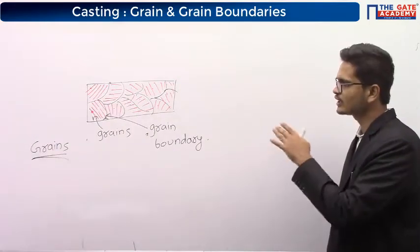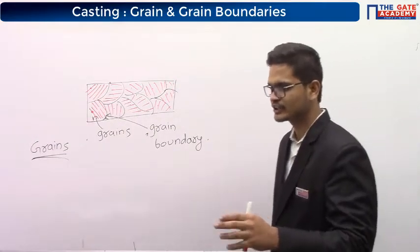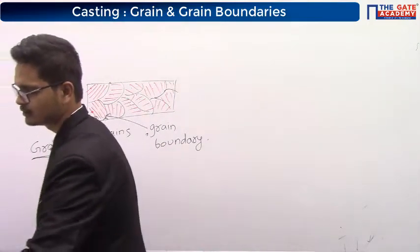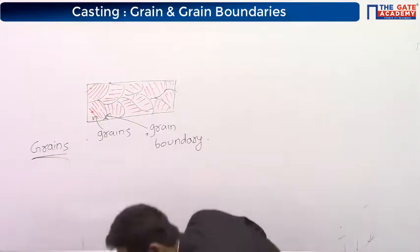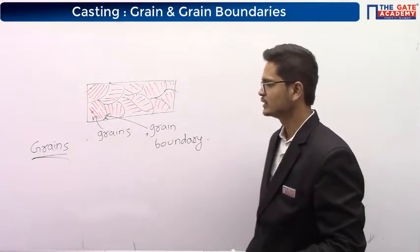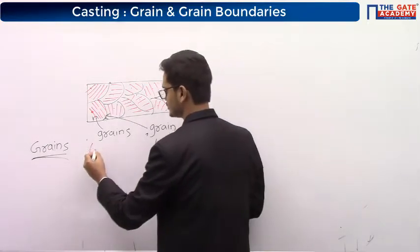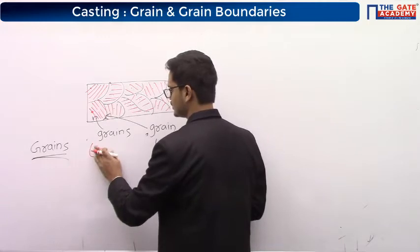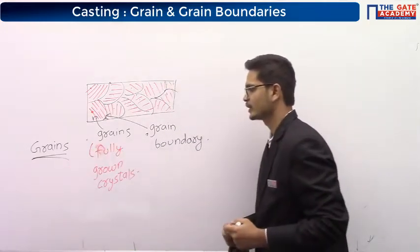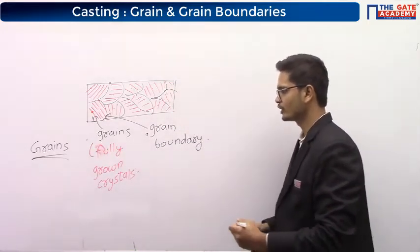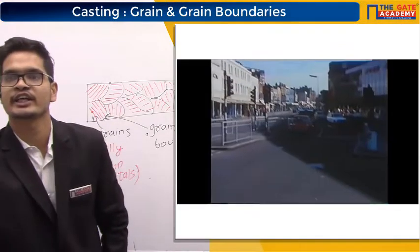So these are the grains and grain boundaries. Next time, if you see that pattern on a metal surface, just remind yourself that those are grains. Grains are fully grown crystals. Please have a look at the secondary screen.